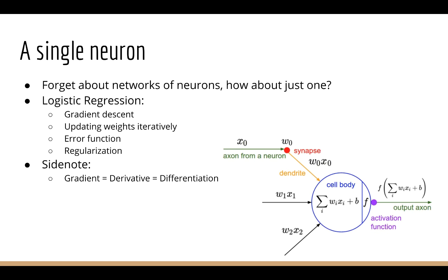You might be wondering: if I have a neural network which is complicated, then what about a single neuron? If I want to understand networks of neurons, then surely it might be advisable to study the neuron itself. And that's exactly what we do. In statistics, the model of the neuron is called logistic regression. It's a simple classifier, but it teaches us so many of the important concepts we'll be using later when we study neural networks — in particular, the concept of gradient descent, the concept of having weights and updating them iteratively, the concept of an error function, the concept of regularization, and so forth. The word gradient in gradient descent is really just another name for a derivative, which we talked about in the context of training a neural network.